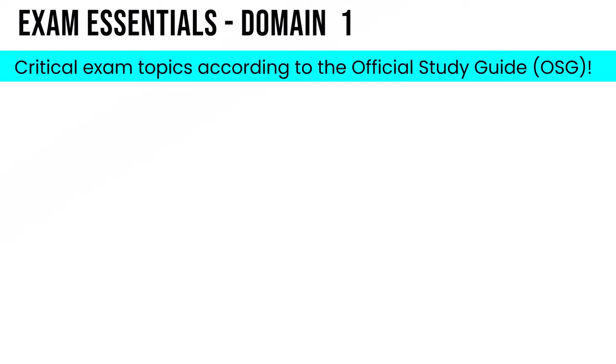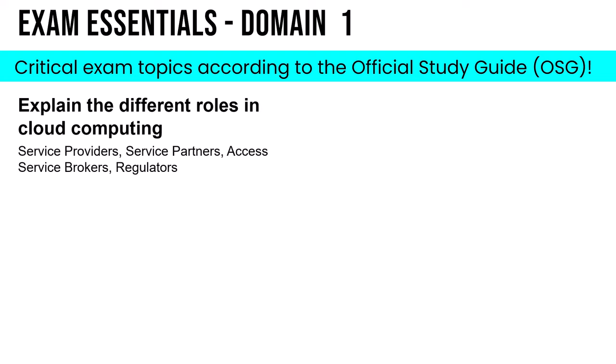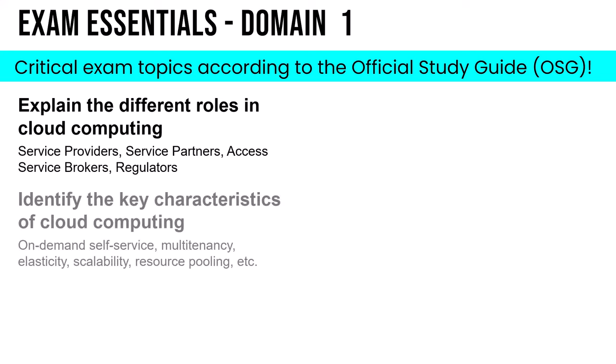The official study guide calls out exam essentials — critical exam topics that are very important to remember for the exam. For domain one, they call out the different roles in cloud computing, like service providers, service partners, and access service brokers, as well as identifying the key characteristics of cloud computing like on-demand self-service, multi-tenancy, elasticity, and scalability.